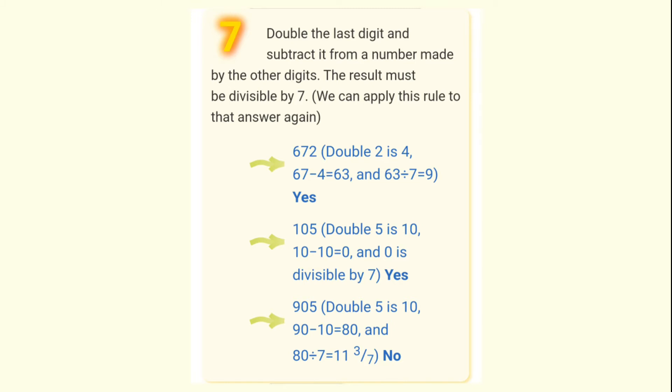105. The last digit is 5. When we double it, we get 10. The number formed by remaining digits is 10. 10 minus 10, we get 0. Since the result is 0, 105 is divisible by 7.